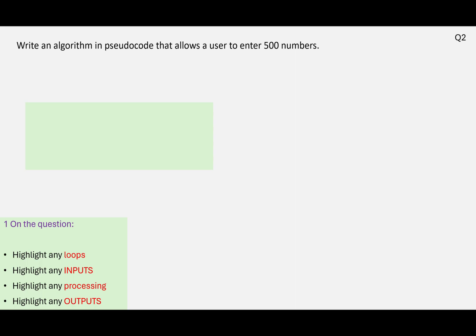So write an algorithm in pseudocode that allows a user to enter 500 numbers. So we've got our annotations down the bottom here, this is what we're going to look for, we're looking for a loop. So I can see here, enter 500 numbers, that suggests we have to repeat that 500 times.